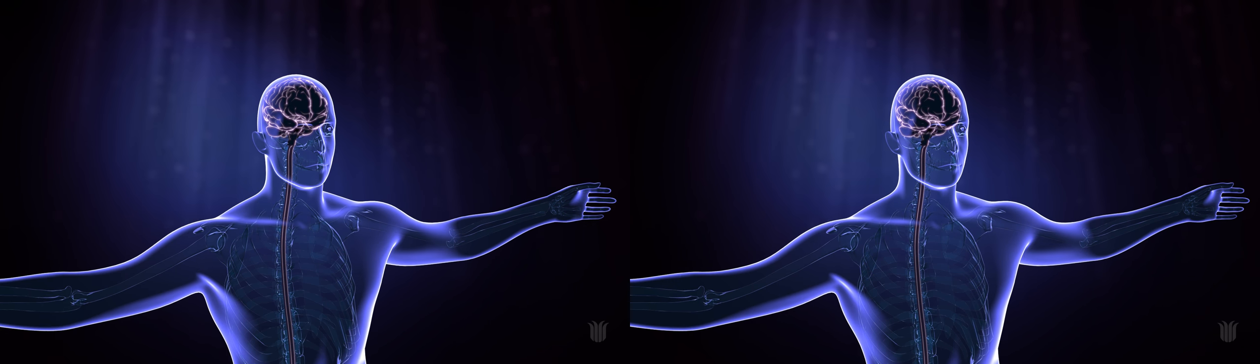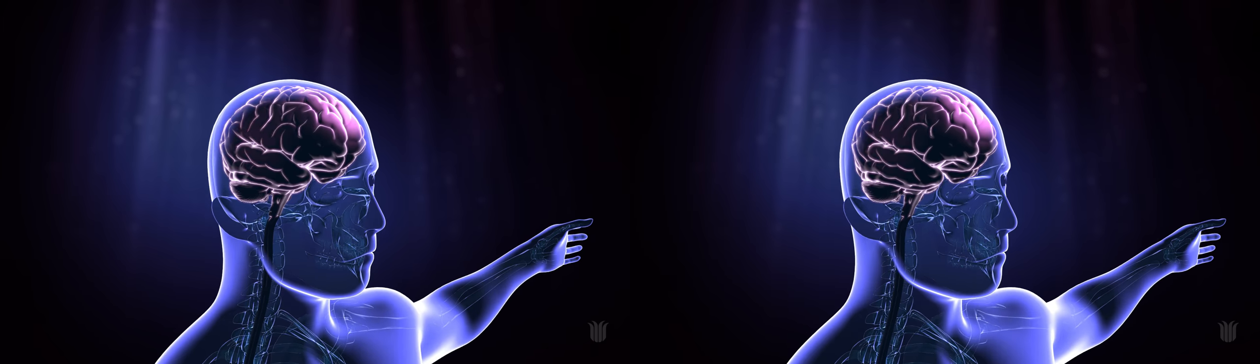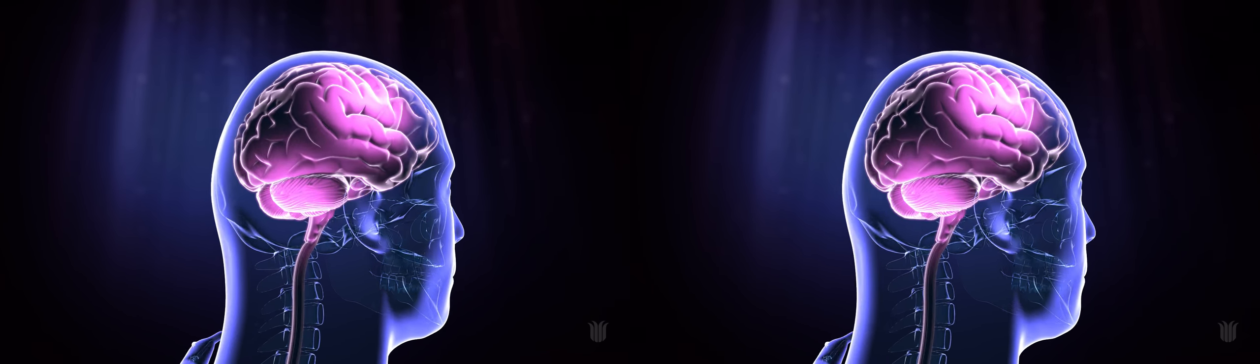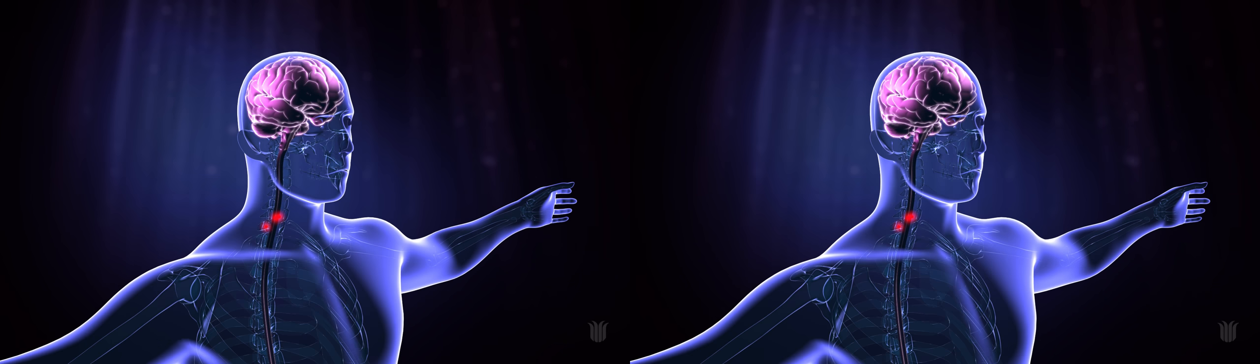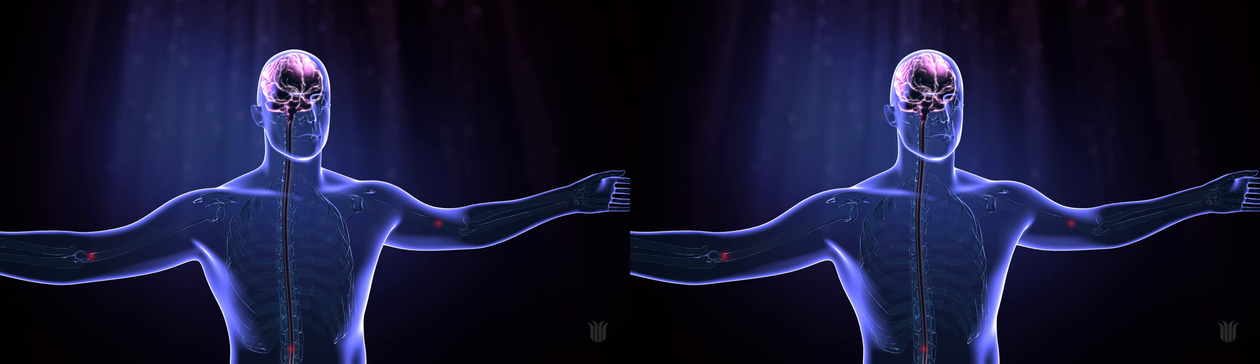Cerebral palsy affects people in different ways because different parts of the brain can be injured. However, it always has some impact on the person's movements, and this is because the messages coming from the brain to the muscles are affected.